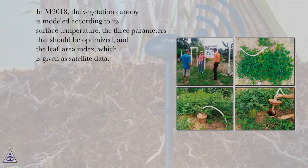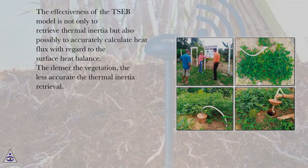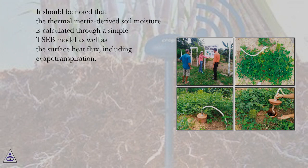In M2018, the vegetation canopy is modeled according to its surface temperature, the three parameters that should be optimized, and the leaf area index, which is given as satellite data. The effectiveness of the TSEB model is not only to retrieve thermal inertia but also possibly to accurately calculate heat flux with regard to the surface heat balance. The denser the vegetation, the less accurate the thermal inertia retrieval. The thermal inertia-derived soil moisture is calculated through a simple TSEB model as well as the surface heat flux, including evapotranspiration.